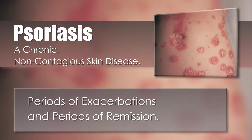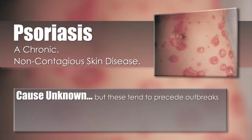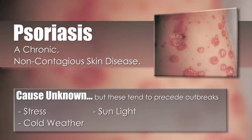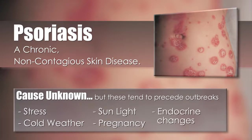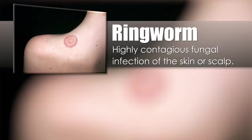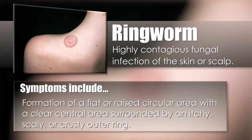The cause of psoriasis is unknown, but stress, cold weather, sunlight, pregnancy, and endocrine changes tend to precede outbreaks. Ringworm is a highly contagious fungal infection of the skin or scalp. Symptoms are the formation of a flat or raised circular area with a clear central area surrounded by an itchy, scaly, or crusty outer ring.